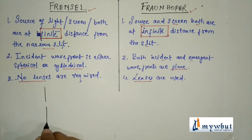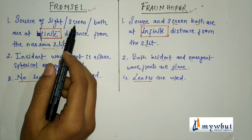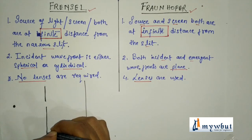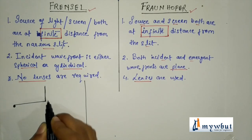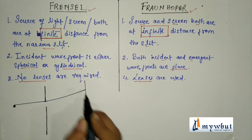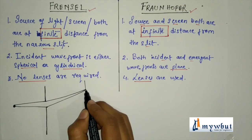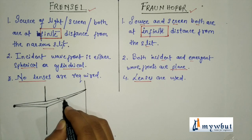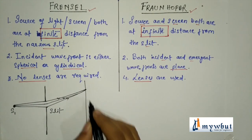For Fresnel diffraction: if this is the slit and this is the screen, the distance between the screen and the source from the slit is always finite. The light comes, gets diffracted by the sharp corners, and falls on the screen. Similarly, from the other corner, light gets diffracted and falls on the screen. So here is the source, here is the slit, and this is the screen — this is the case of Fresnel diffraction.